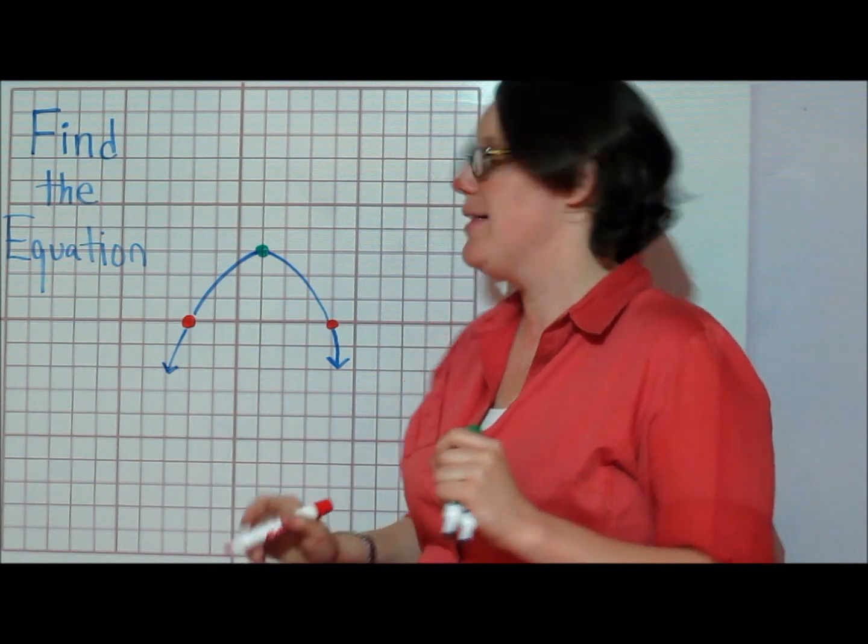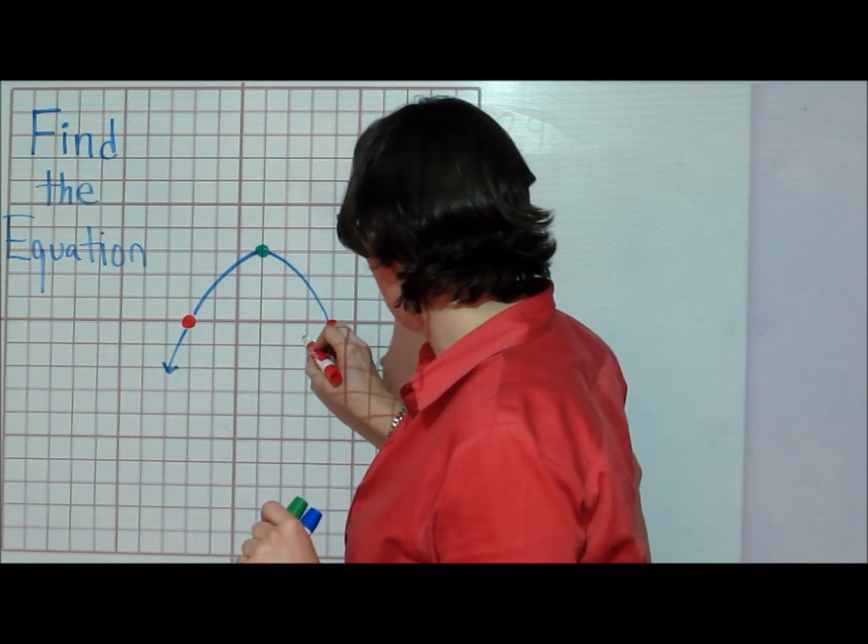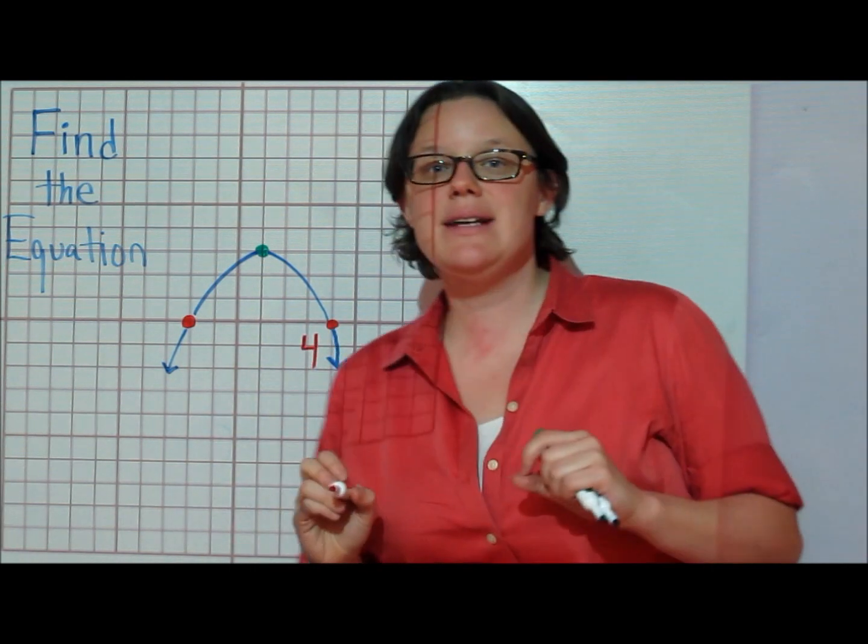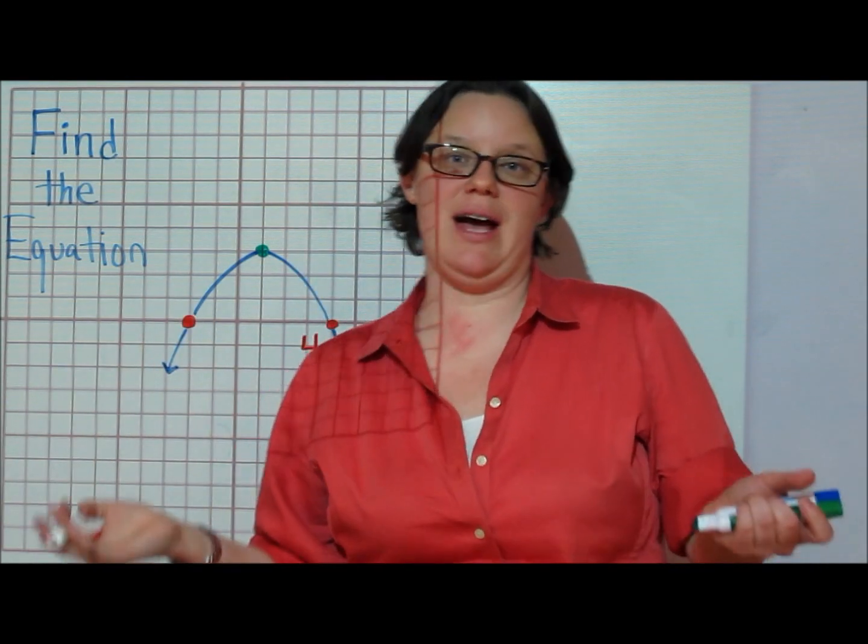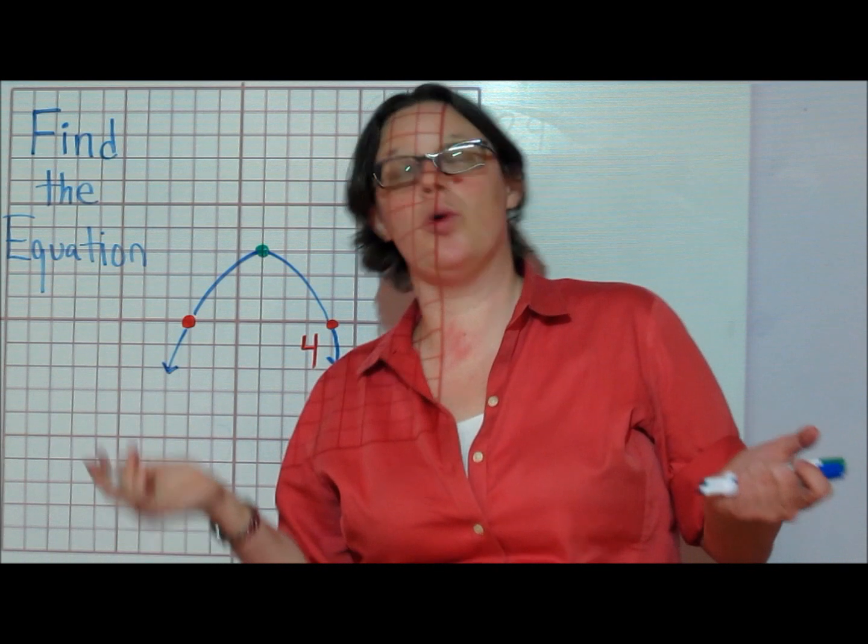This parabola has an x-intercept of 4. That tells me that x minus 4 must be a factor, because that's a factor with 4 as a zero.